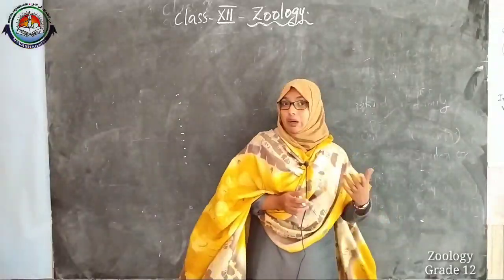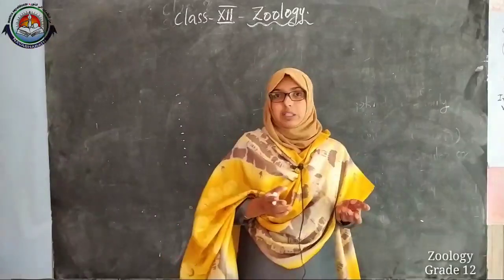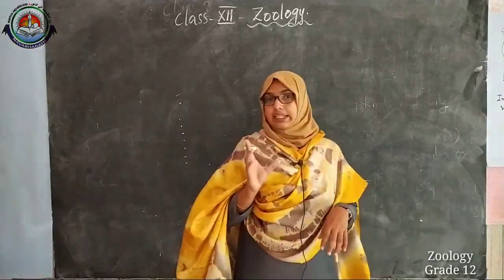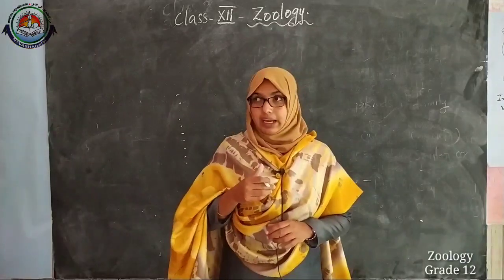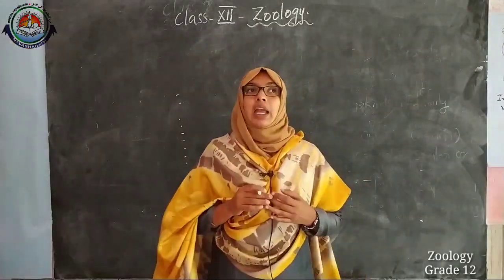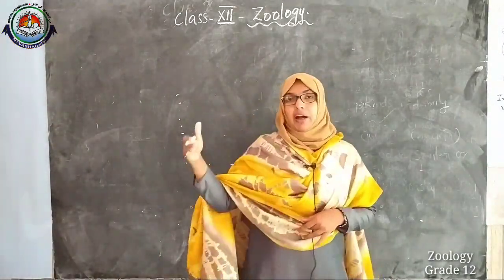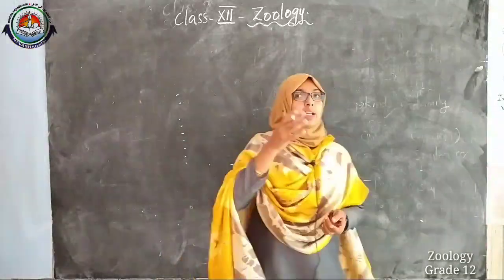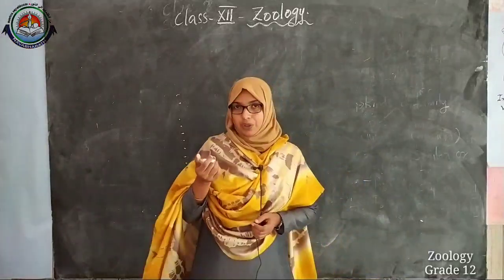We discussed immunity and the difference between innate immunity and acquired immunity. In the last session, we discussed innate immunity and the four types of barriers. Today we are going to deal with the second part. Immunity is of two types: innate immunity and acquired immunity. Today we are dealing with acquired immunity.